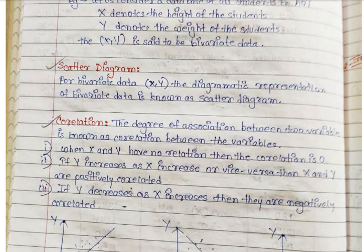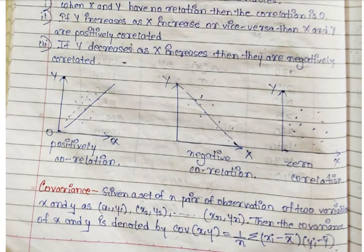If X and Y have no relation, then the correlation will be zero. If Y increases as X increases and Y decreases as X decreases — that is, both variables depend on each other proportionally — then X and Y are positively correlated. If one variable increases while the other decreases, showing opposite behavior, then X and Y are negatively correlated.